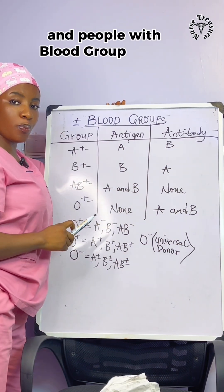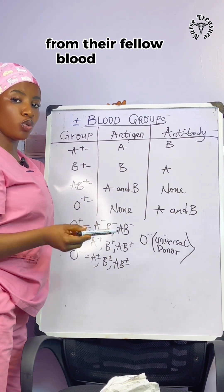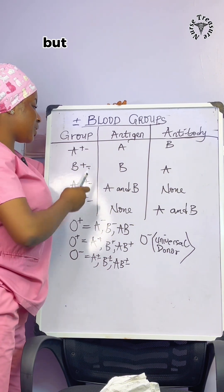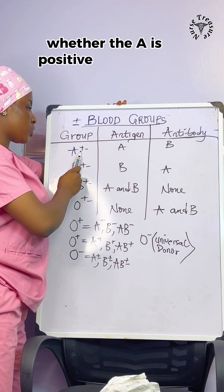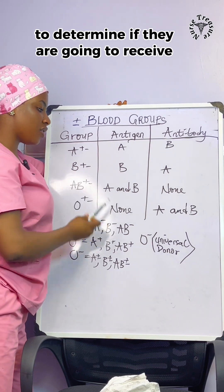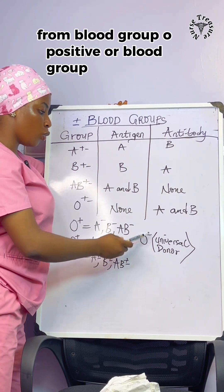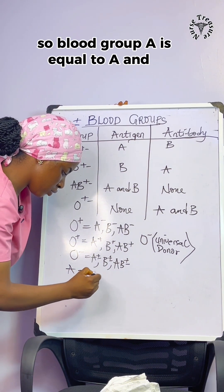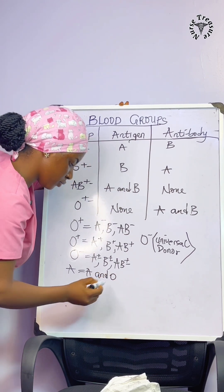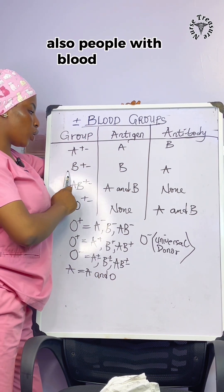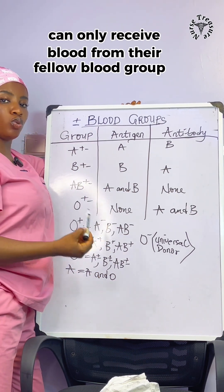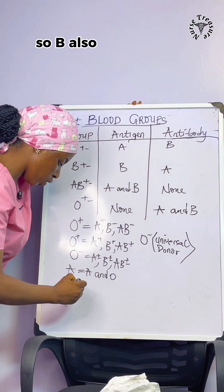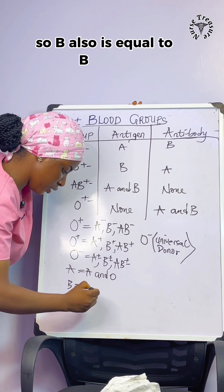People with blood group A can only receive blood from fellow blood group A and blood group O, since group O is the universal donor. But it depends on the rhesus factor — whether A is positive or negative — to determine if they receive from O positive or O negative. So blood group A can receive from A and O. Similarly, people with blood group B can only receive blood from blood group B and blood group O, depending on their rhesus factor. So B can receive from B and O.